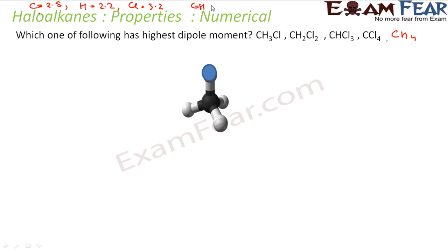The carbon-hydrogen dipole moment is 0.3 mu and carbon-chlorine is 1.5 mu. To simplify things, we'll assume carbon-hydrogen dipole to be x, and carbon-chlorine is almost 5 times x — so we'll call it 5x. This simplification will help us compare the compounds.